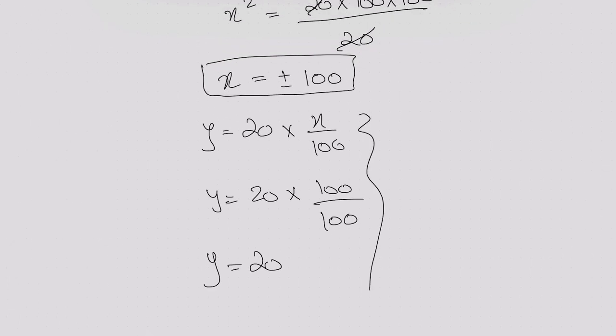For the value of x negative 100, y equals 20 multiplied by minus 100 over 100, and this gives me a value equals to minus 20. So there will be two values of x and for the two values of x, I will have two solutions for y: positive 20 and negative 20. Thank you.